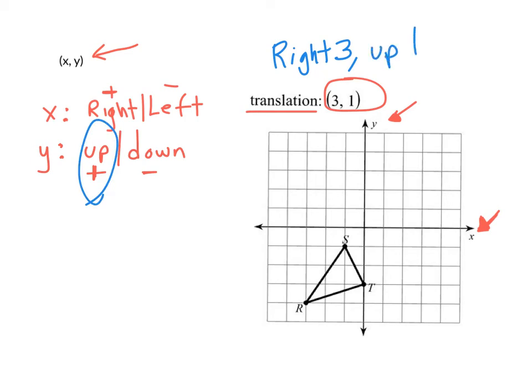So the same as in the first example, I'm going to start with the T, just because that's the one I see first. We're going to go right 3, 1, 2, 3, up 1, put a dot, label it T prime. We go to R, 1, 2, 3, up 1. Notice that R prime is sitting on top of T. That happens sometimes. Don't panic. It's okay.